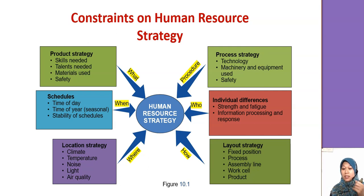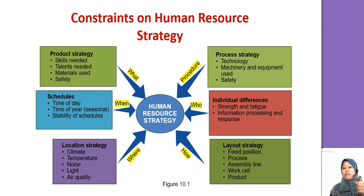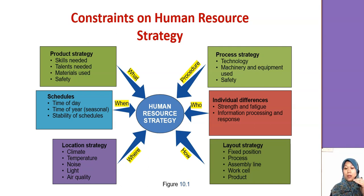Then we look at the process strategy: what are the machines involved, and what skills are required for those machines — these determine who we need to hire. Safety of equipment and machinery is also considered. We also need to account for individual differences — different levels of education and different work descriptions — so all employees are matched appropriately with the work they are assigned to.